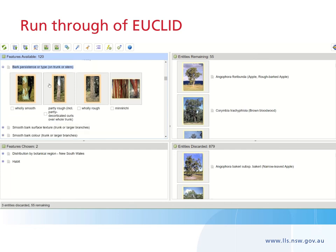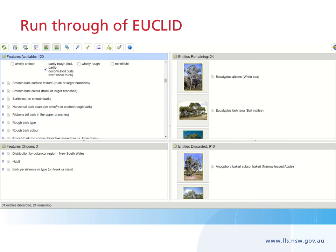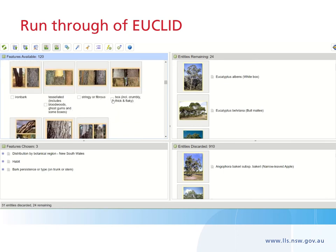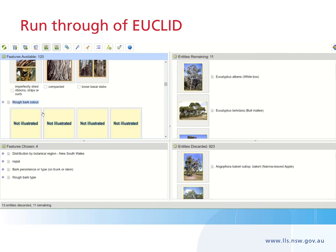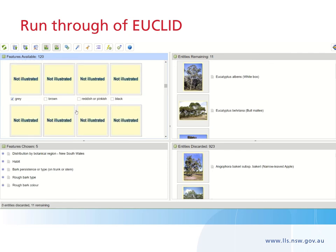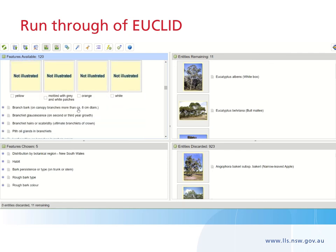From there we go to bark persistence. Ours has smooth upper branches, so it is partly rough. Then we go to rough bark type — it is a very classic box tree, so we click box. The next step is colour, which is grey. We can see the entities remaining are clicking down quite nicely — we're down to 11 from 900, so we're going very well.